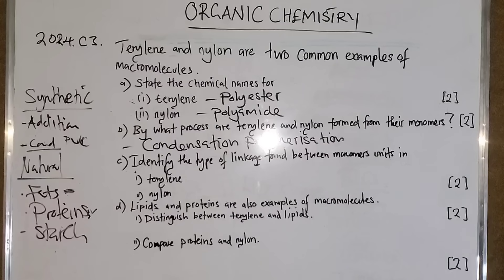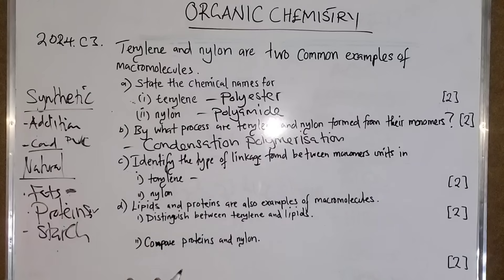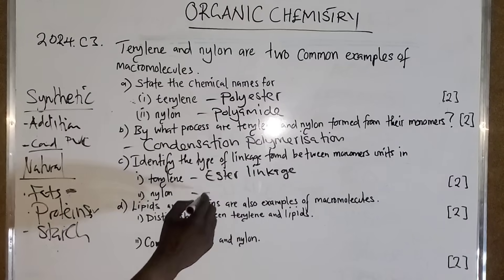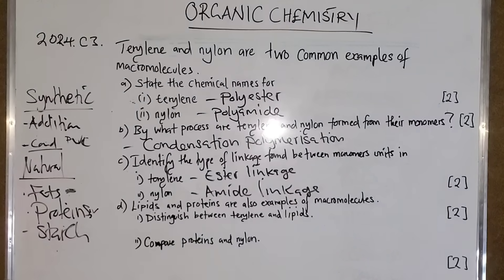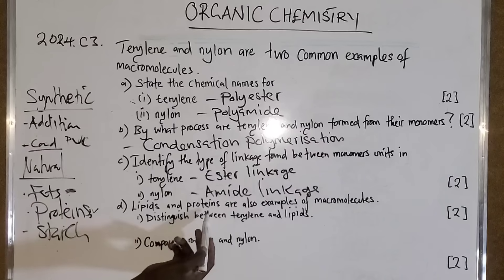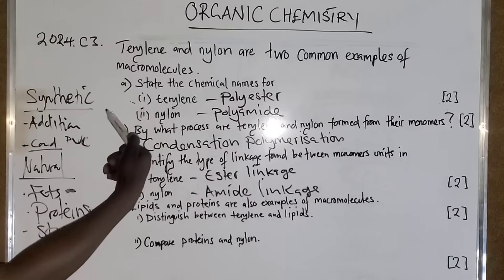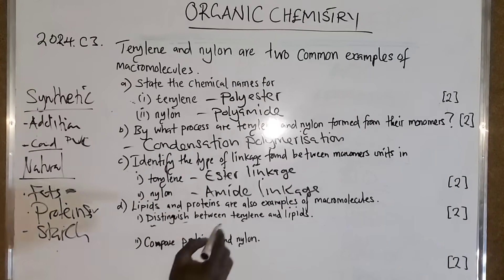In terylene, the linkage is an ester linkage. Lipids and proteins are also examples of macromolecules. Here we have terylene, and we also have lipids which are macromolecules. The question asks us to distinguish — meaning to differentiate — between terylene and lipids.